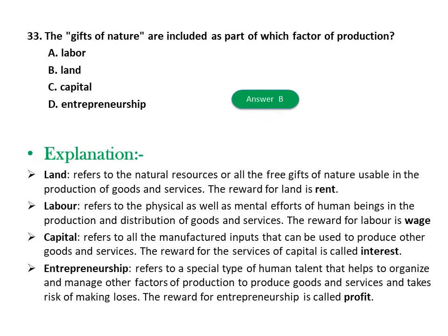Explanation for factors of production: Land refers to natural resources and free gifts of nature; its reward is rent. Labor refers to the physical and mental effort of human beings in production; its reward is wages. Capital refers to all manufactured inputs used to produce other goods and services; its reward is interest. Entrepreneurship organizes and manages other factors of production and takes the risk of losses; its reward is profit.